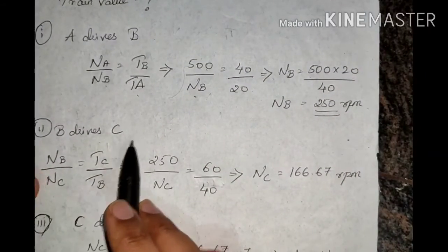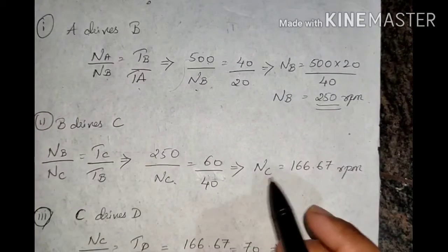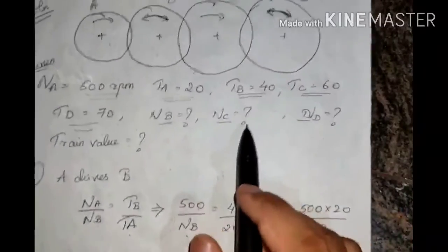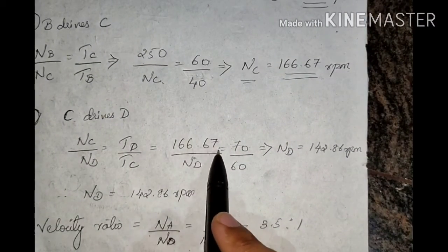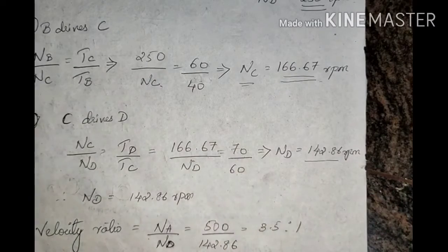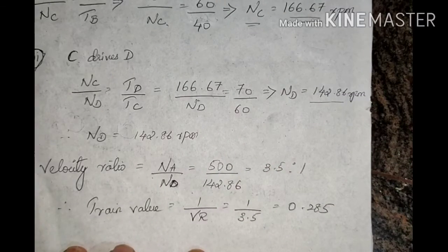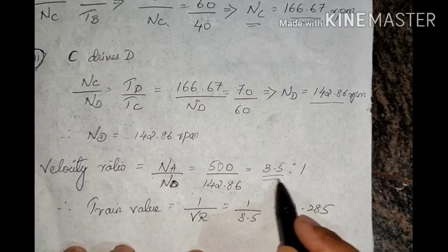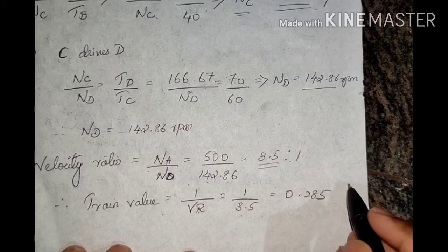Since C drives D: NC/ND = TD/TC → 166.67/ND = 70/60, so ND = 142.86 RPM. The velocity ratio between driving gear A and driven gear D is NA/ND = 500/142.86 = 3.5:1. The train value is the reciprocal of the velocity ratio: 1/3.5 = 0.285.